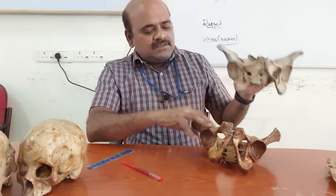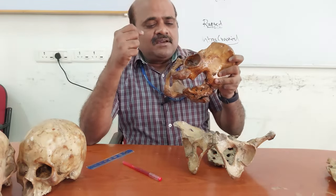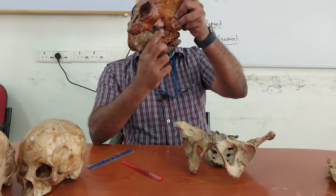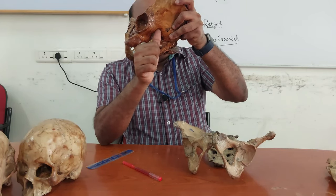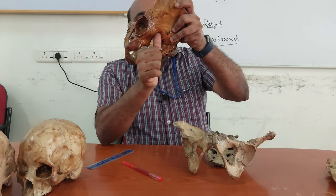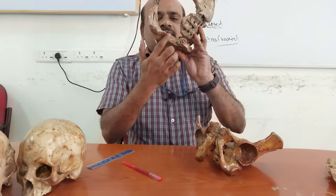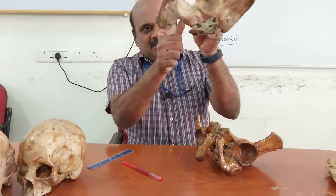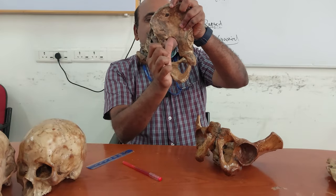Now comes the greater sciatic notch — a very important and useful feature, said to be one of the best single criteria for determining sex. In the male it is smaller, narrower and deeper. If you fix your thumb in the groove, it fits tightly — there is no space to wriggle freely. In the female, the greater sciatic notch is larger, wider and shallower. If you put your thumb there, you can see there is enough space for wriggling. This is otherwise called the thumb test and is an important discriminant.